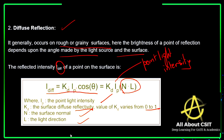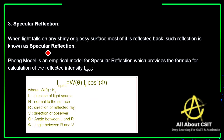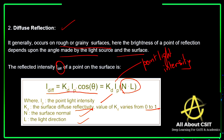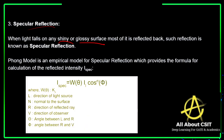Coming to specular reflection — when light falls on a shiny or glossy surface, most of it is reflected back. Such reflection is known as specular reflection, as opposed to diffuse reflection which occurs on rough or grainy surfaces.